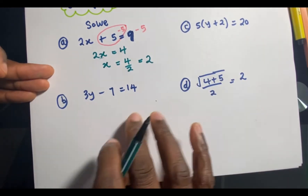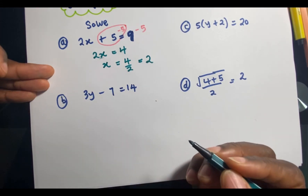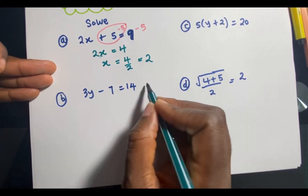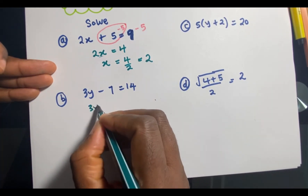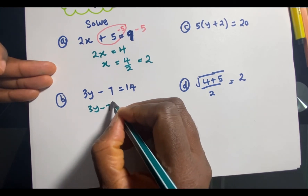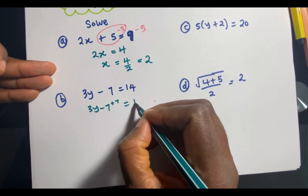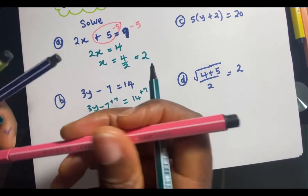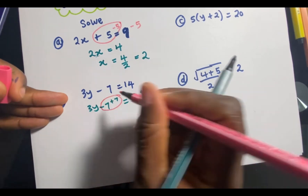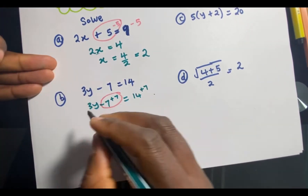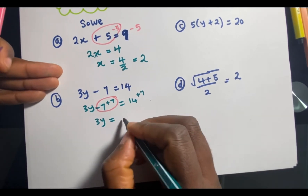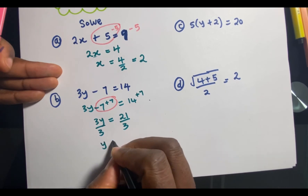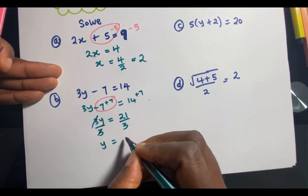The next problem is 3y - 7 = 14. The first thing to do is add 7 to both sides: 3y - 7 + 7 = 14 + 7. This gets rid of the -7, so 3y = 21. Dividing both sides by 3, y is equal to 7.